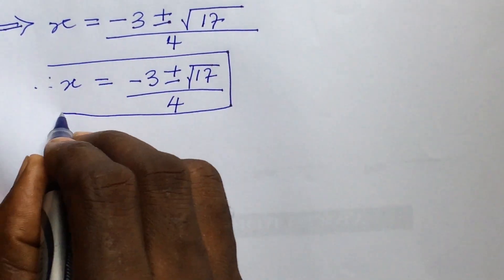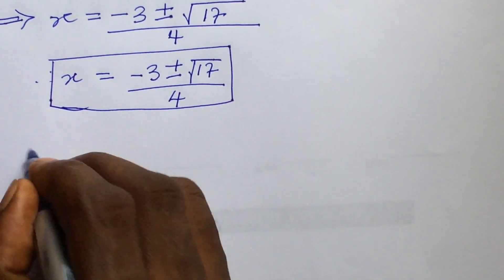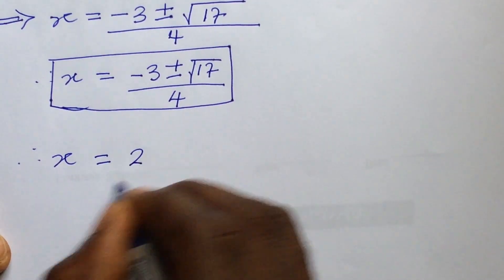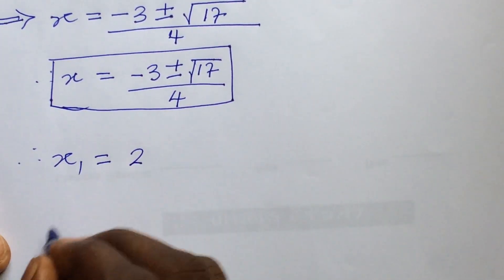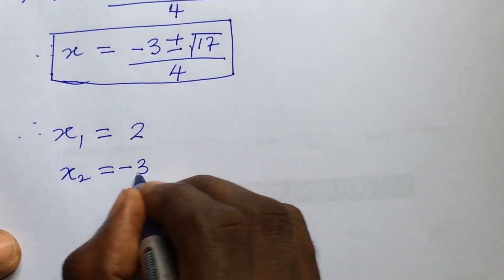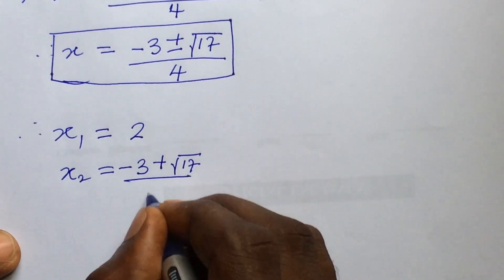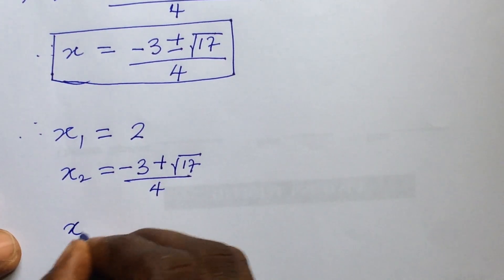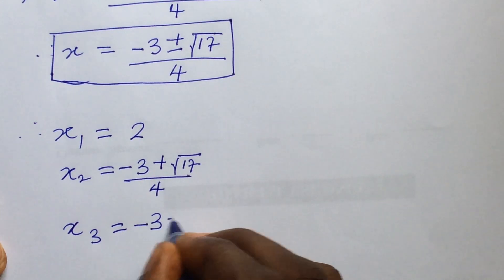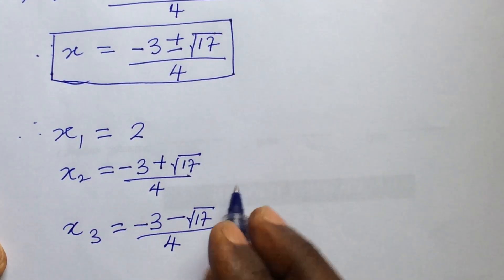Therefore the three roots of the polynomial are: x₁ = 2, x₂ = (-3 + √17) / 4, and x₃ = (-3 - √17) / 4. These are the three zeros of the polynomial 2x³ - x² - 7x + 2 = 0.